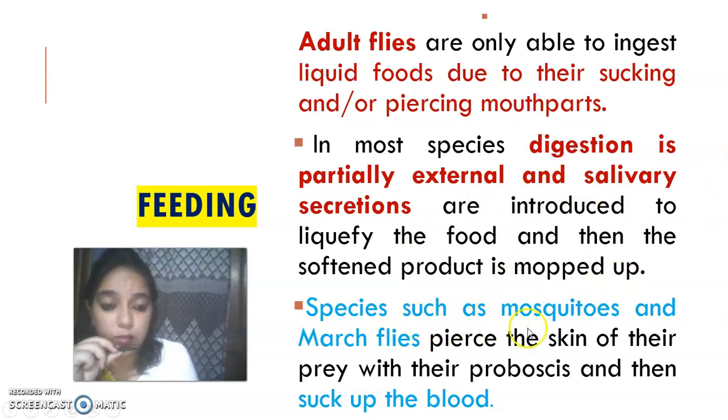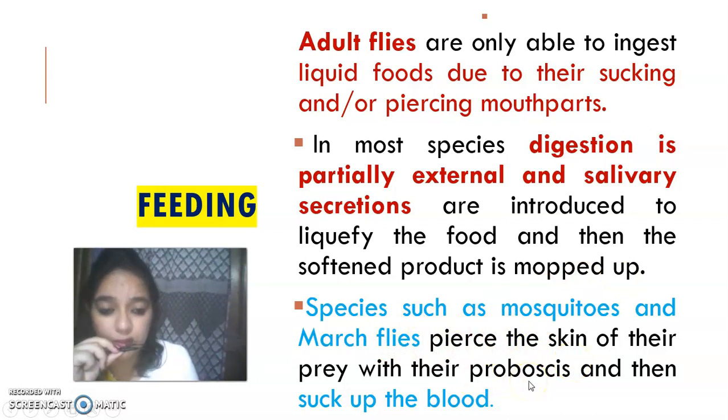Mosquitoes and some other dipterans pierce our skin with their mouthparts and then feed on blood using their proboscis.